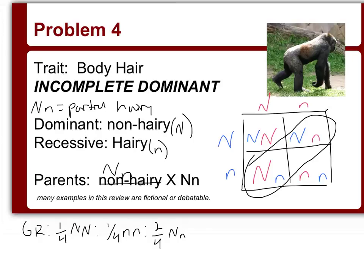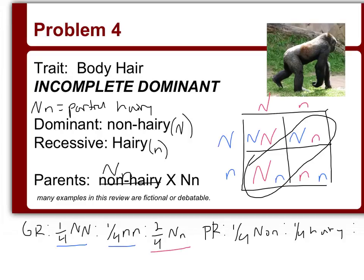The phenotype ratios are different because this is an incomplete dominant trait — the heterozygous individuals look different from both the homozygous dominant and homozygous recessive. So my phenotype ratio is: one-fourth non-hairy, one-fourth completely hairy, and one-half partial hairy. The key thing to remember with incomplete dominance is that the heterozygous individuals show a different phenotype than either homozygous type.